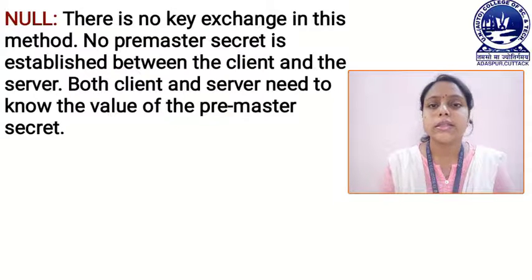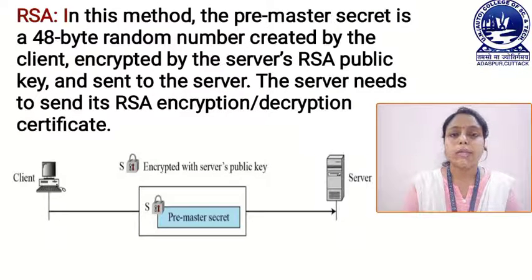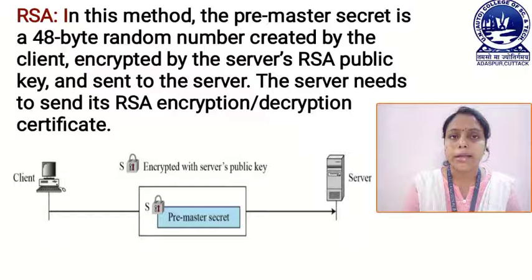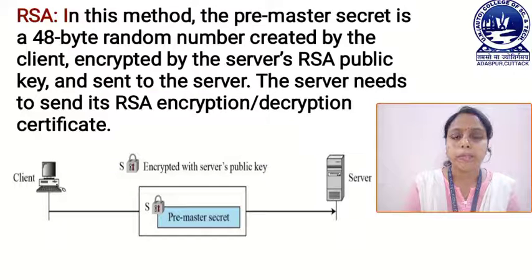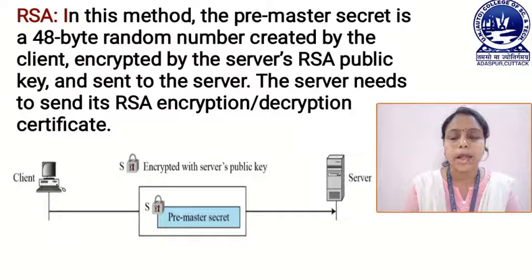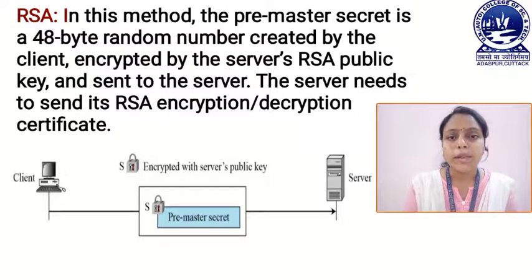Both client and server need to know the value of the premaster secret so that they can exchange information. In the RSA algorithm, the premaster secret is a 48-byte random number created by the client and encrypted by the server's RSA public key and sent to the server.